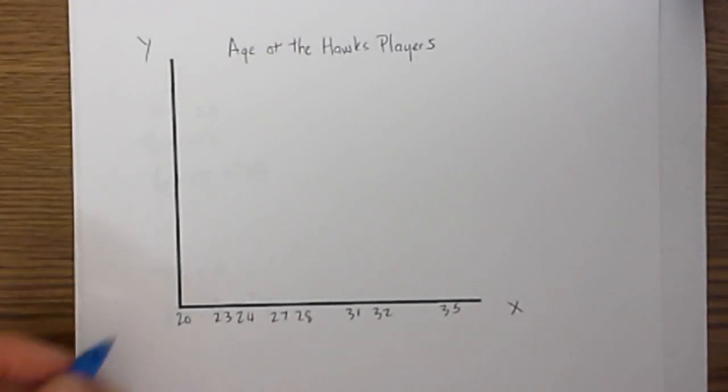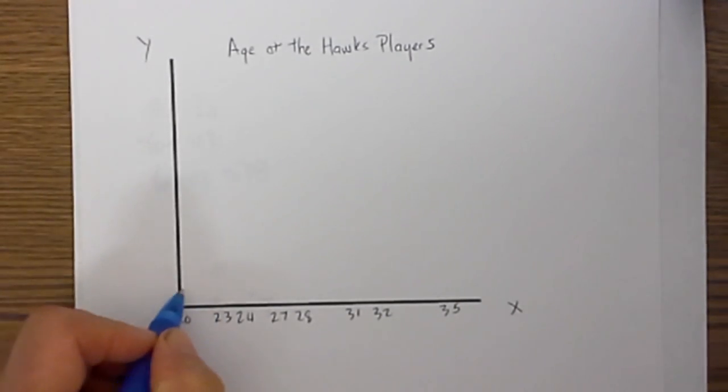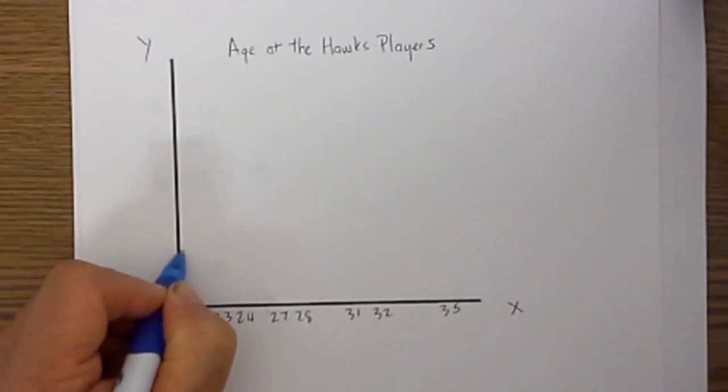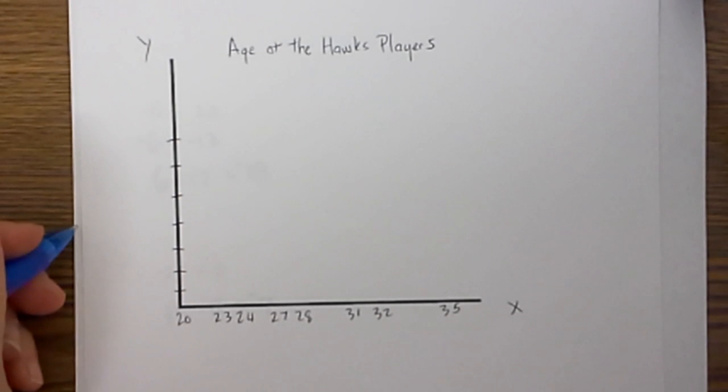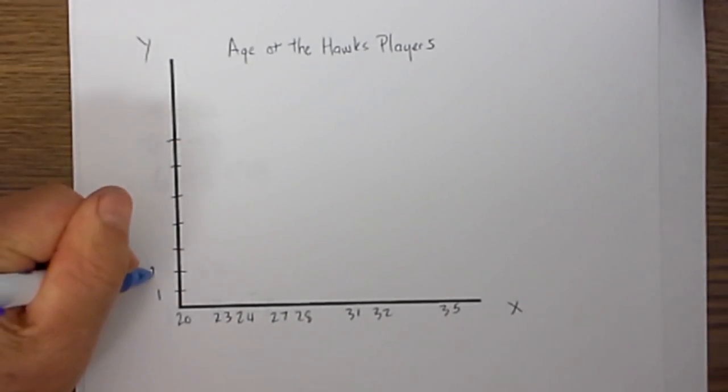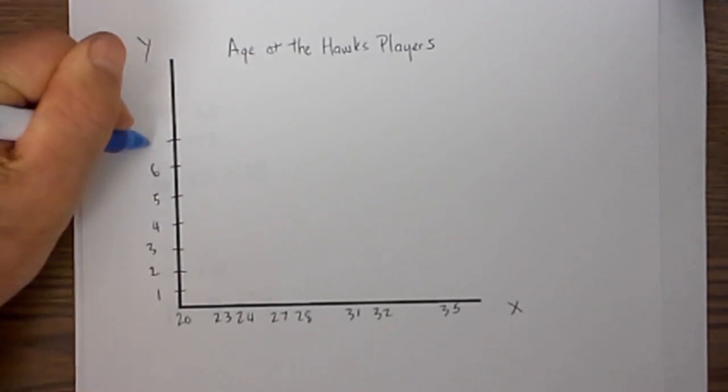So now the y axis will run 1 through 6. I am going to go 1, 2, 3, 4, 5, 6. I will do one more, so I can label them. 4, 5, 6, 7.